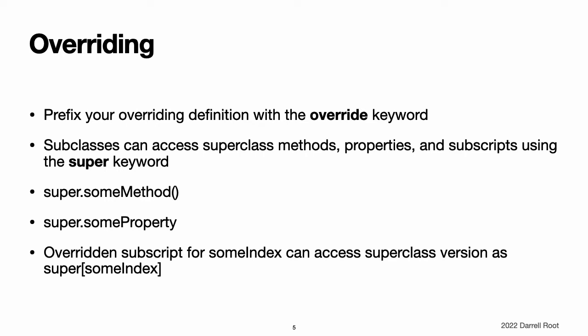Overriding. A subclass can provide its own custom implementation of an instance method, type method, instance property, type property, or subscript that it would otherwise inherit from a superclass. This is known as overriding. To override a characteristic that would otherwise be inherited, you prefix your overriding definition with the override keyword. Doing so clarifies that you intend to provide an override and have not provided a matching definition by mistake. Overriding by accident can cause unexpected behavior, and any overrides without the override keyword are diagnosed as an error when your code is compiled. The override keyword also prompts the Swift compiler to check that your overriding class's superclass, or one of its parents, has a declaration that matches the one you provided for the override. This check ensures that your overriding definition is correct.